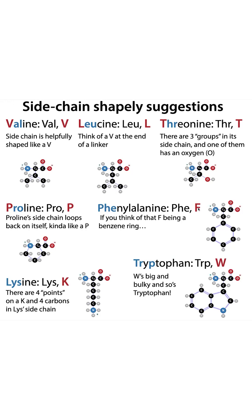Phenylalanine — if you think of it as a benzene ring on the end of a linker, you get phenylalanine. Lysine: there are four points on a K and there are four carbons on lysine's side chain. And finally, tryptophan — we've got this big bulky W and we've got this big bulky side chain.